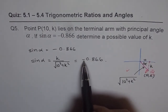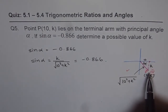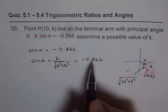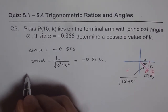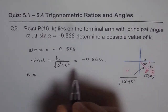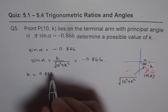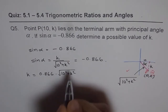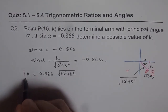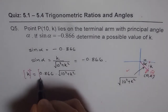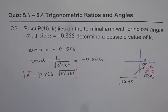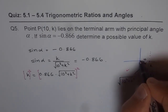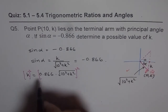The negative sign tells us we are in this quadrant. We will consider alpha as a positive value and figure out the answer. We cross multiply and then square. So we get: 0.866 times the square root of 10 squared plus k squared equals k. We square both sides to solve for k, and assume we are working with a similar triangle in quadrant 1 with a positive value.